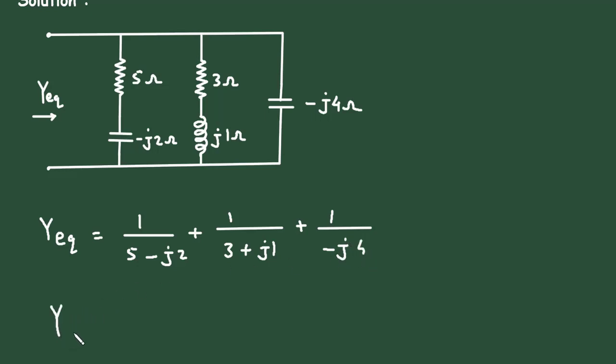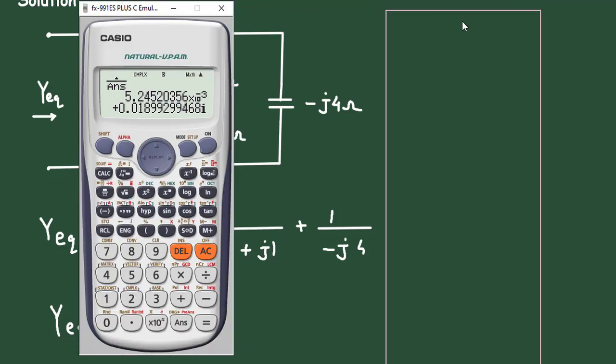So therefore, Y_eq is equal to, if we solve this in calculator, this will be 1 upon 5 minus j times 2, plus 1 upon 3, plus 1 upon 3 plus j times 1, then plus 1 upon minus j times 4.